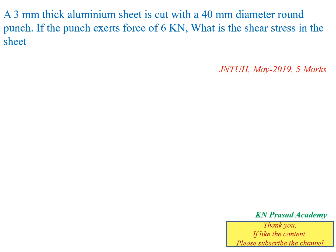A similar type of problem was asked in the JNU previous year exam in May 2019 for five marks. The question is: a 3 mm thickness aluminium sheet is cut with a 40 mm diameter round punch. If the punch exerts a force of 6 kN, what is the shear stress in the sheet? We equate forces: the punch force of 6 kN equals the shearing force, which is shear stress τ times the shearing area π·d·t.